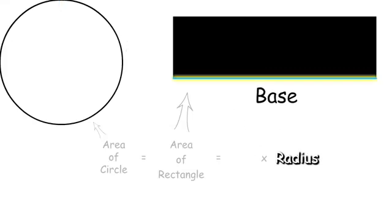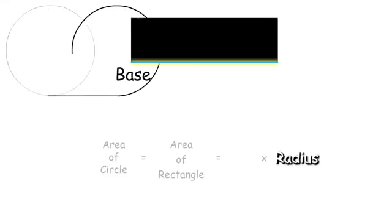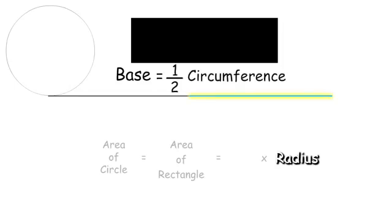To find the base, we need to look at the circumference of the circle. When we compare the base and the circumference, we can see that the base is equal to one-half the circumference.